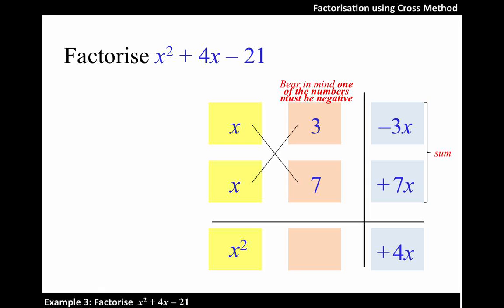As a result, we work backwards now. Negative 3x means we have x times negative 3. Whereas, to get positive 7x, it remains as x times positive 7.